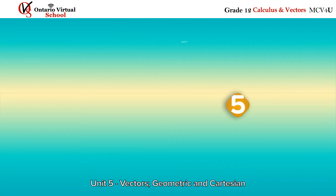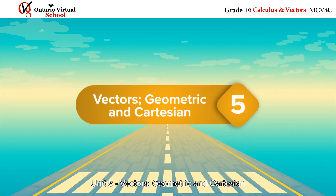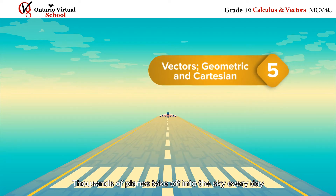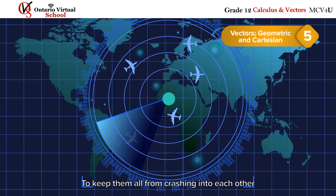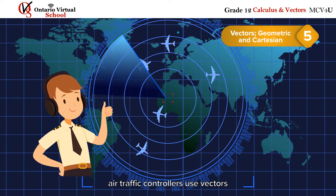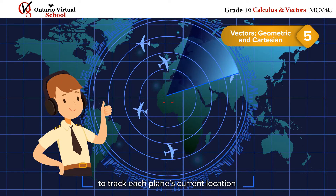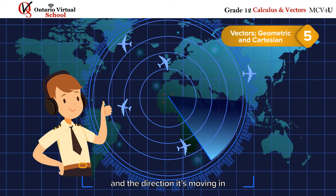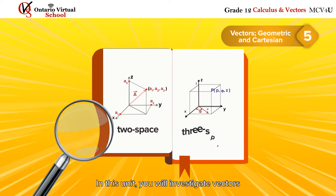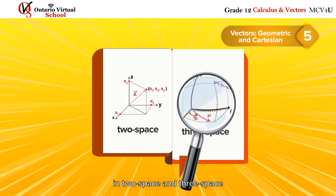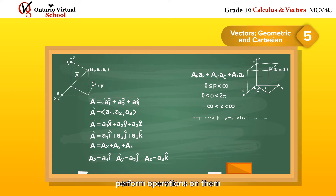Unit five: Vectors — Geometric and Cartesian. Thousands of planes take off into the sky every day. To keep them all from crashing into each other, air traffic controllers use vectors to track each plane's current location and the direction it's moving in. In this unit, you will investigate vectors in two-space and three-space and perform operations on them.